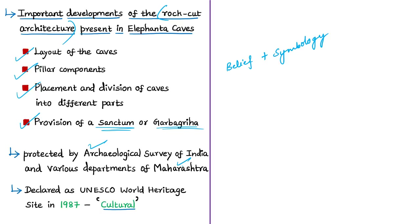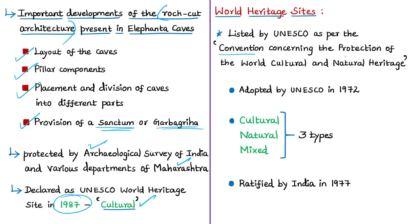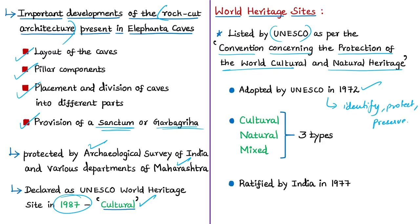The monument is primarily protected by the Archaeological Survey of India with assistance from various Maharashtra state departments. From an examination perspective, the Elephanta Caves were declared a UNESCO World Heritage Site in 1987, under the cultural heritage site category. These sites are established under the Convention Concerning the Protection of the World Cultural and Natural Heritage, adopted by UNESCO in 1972. Through this treaty, UNESCO encourages member nations to identify, protect, and preserve cultural and natural heritage sites of outstanding value to humanity. World Heritage Sites are listed in three categories: cultural, natural, and mixed heritage sites.